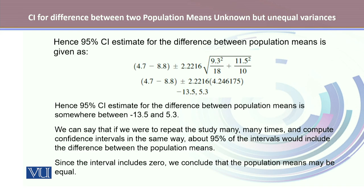Using this reliability factor, the estimates for the standard error and the difference between means give a calculated confidence interval of minus 13.5 to 5.3. We can say that if we were to repeat the study many times and compute the confidence interval in the same way, about 95% of the intervals would include the difference between the population means. Since the interval includes 0, we conclude that the population means may be equal.